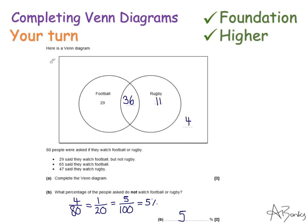Here's a solution. So this time they've told me that 29 said they watch football but not rugby, and that information is actually already filled in for me. Then they say that 65 watch football. Now this is the total of this circle here. So these two numbers add up to 65, which means this in the centre must be 36. And 47 watch rugby - that's the entire circle here. So if this is 36, that must be 11, so that they add up to 47. And then the last number on the outside, these need to total to 80, so this is 4.